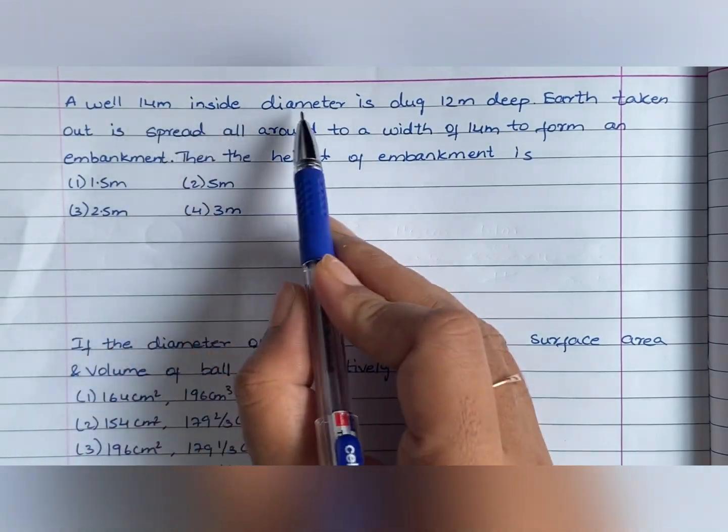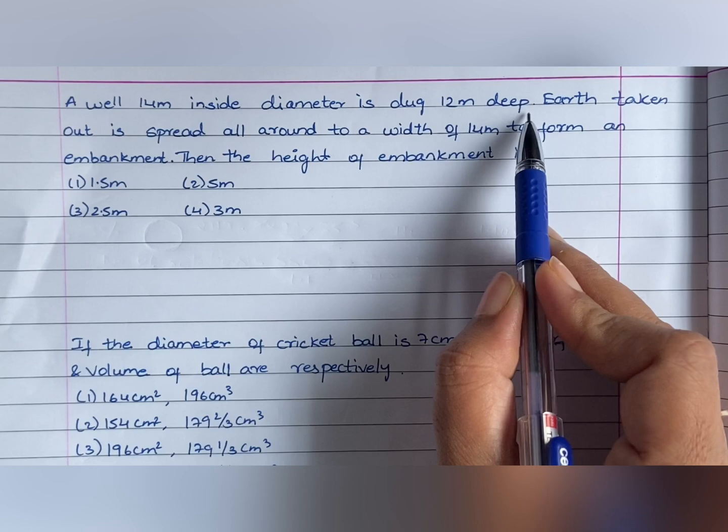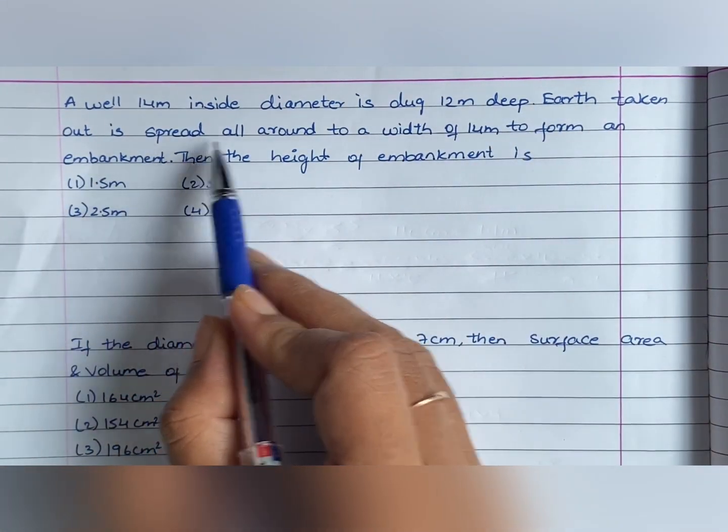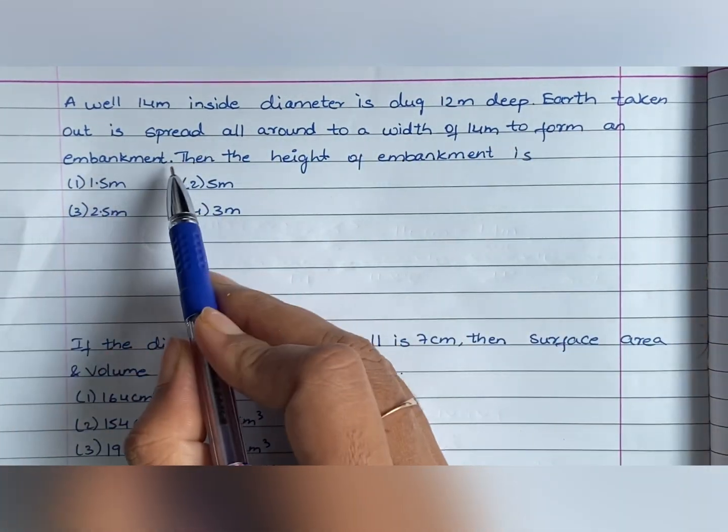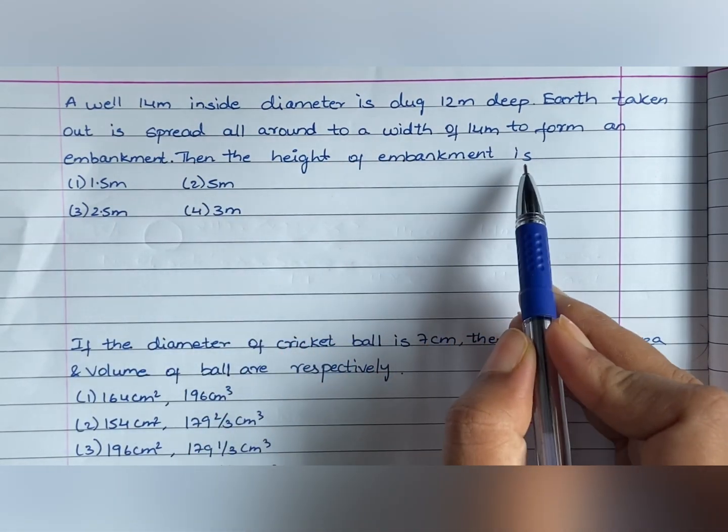A well, 14 meters inside diameter is dug 12 meters deep. Earth taken out is spread all around to a width of 14 meters to form an embankment. Then the height of the embankment.